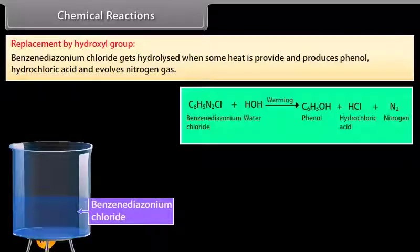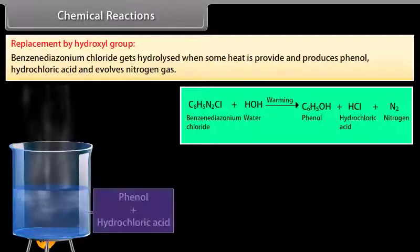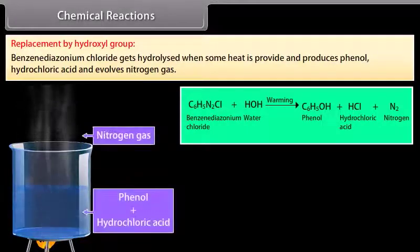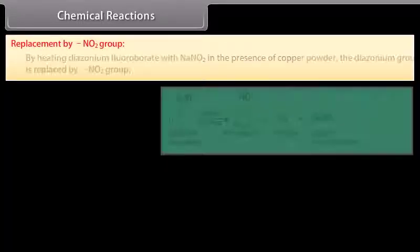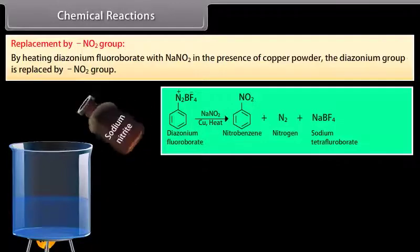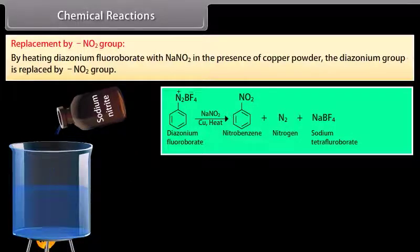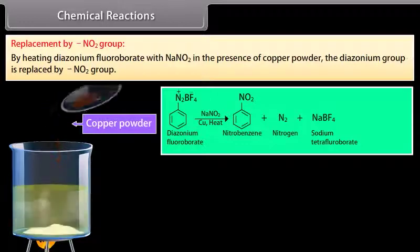Replacement by hydroxyl group: Benzene diazonium chloride is hydrolyzed on heating to produce phenol, hydrochloric acid, and nitrogen gas. Replacement by nitro group: By heating diazonium fluoroborate with sodium nitrite in the presence of copper powder, the diazonium group is replaced by a nitro group.